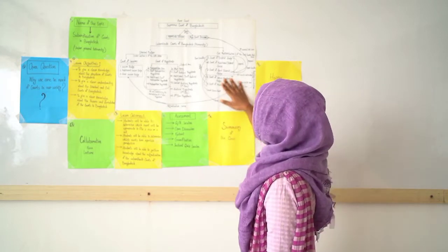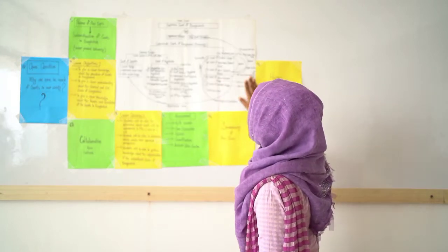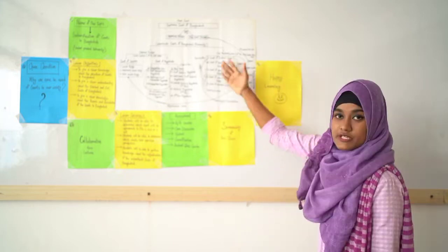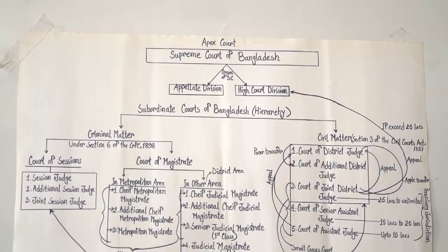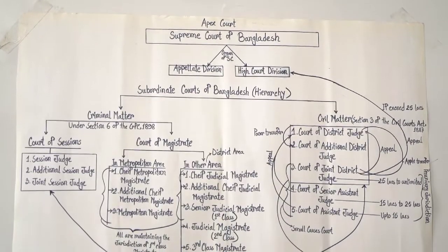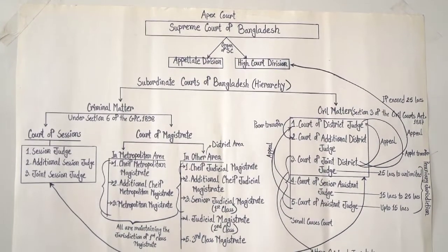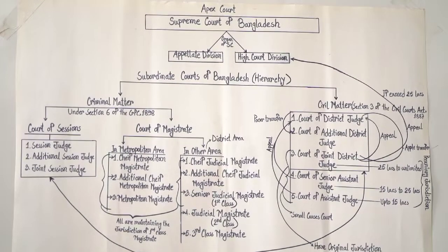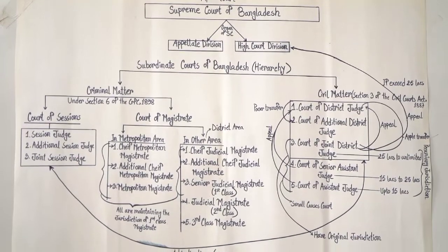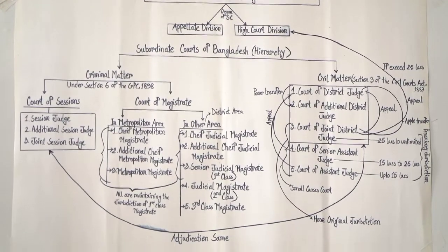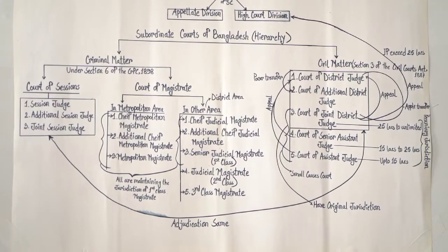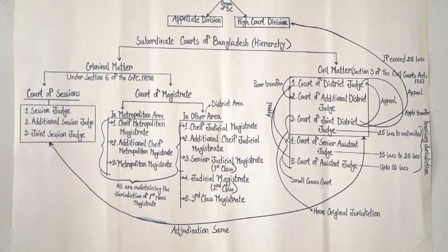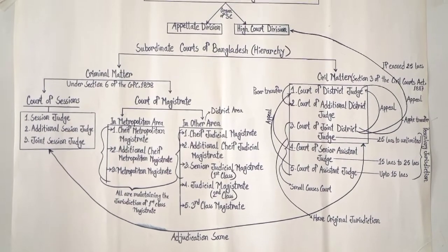I have structured this diagram on the basis that the Supreme Court is the apex court of Bangladesh, and this court has two divisions: one is the Appellate Division and the other is the High Court Division.